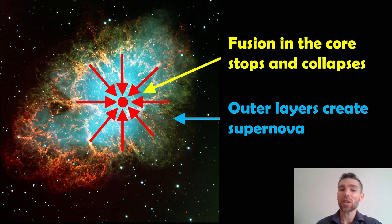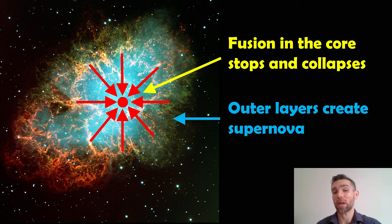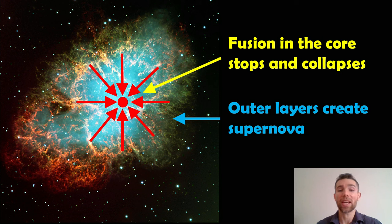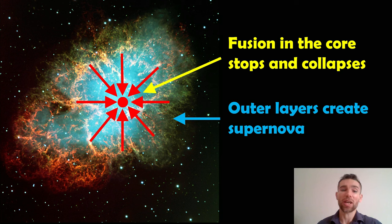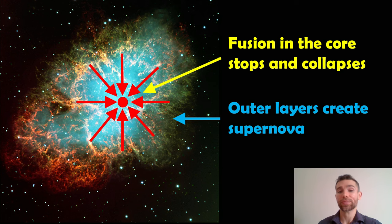The outer layers of the star are ejected into a supernova remnant. This is the Crab Nebula here — it was from a type 2 supernova and it left this really nice-looking nebula. Those are the outer layers of the star, but right in the center you've got a pulsar, which is essentially the collapsed core of that star.